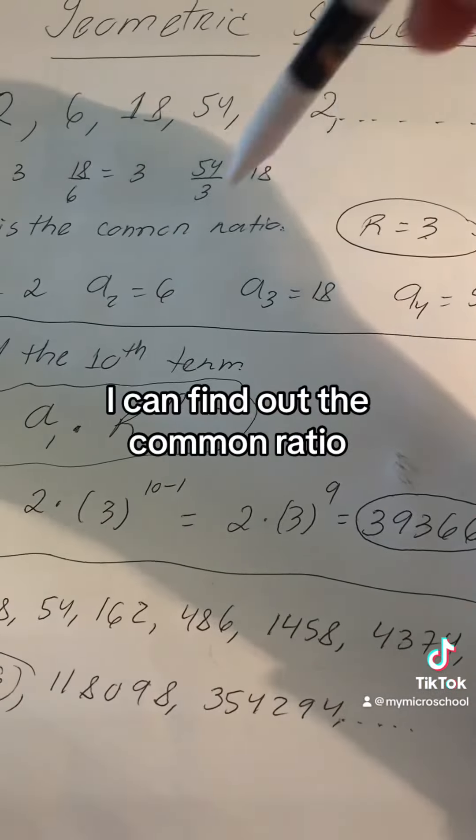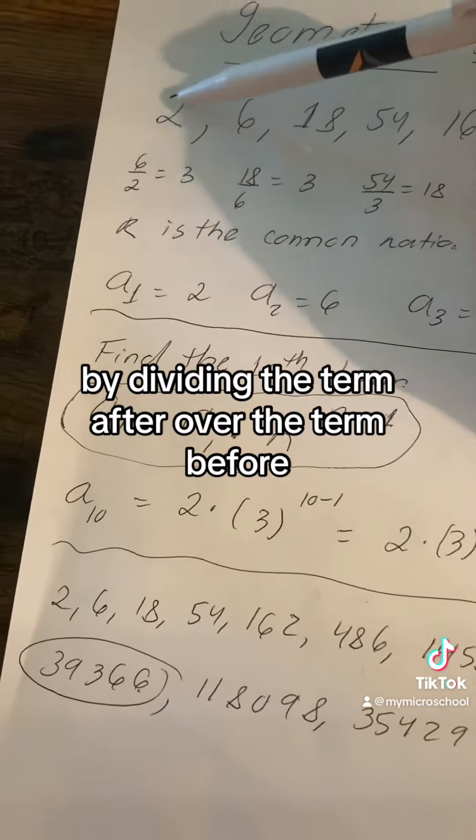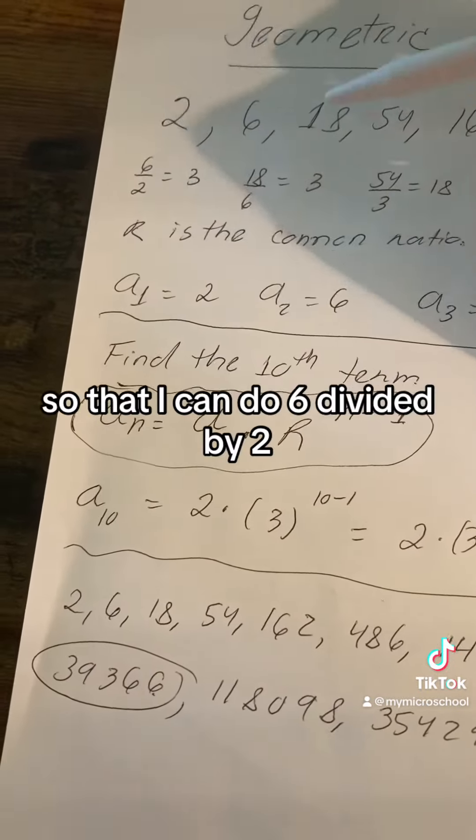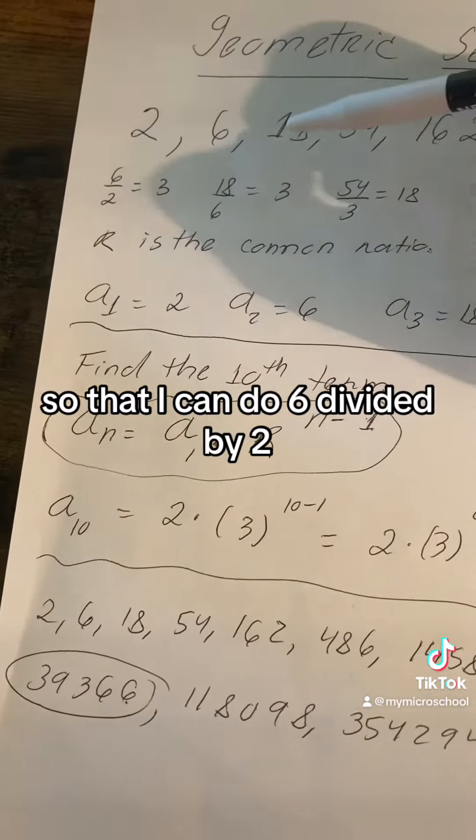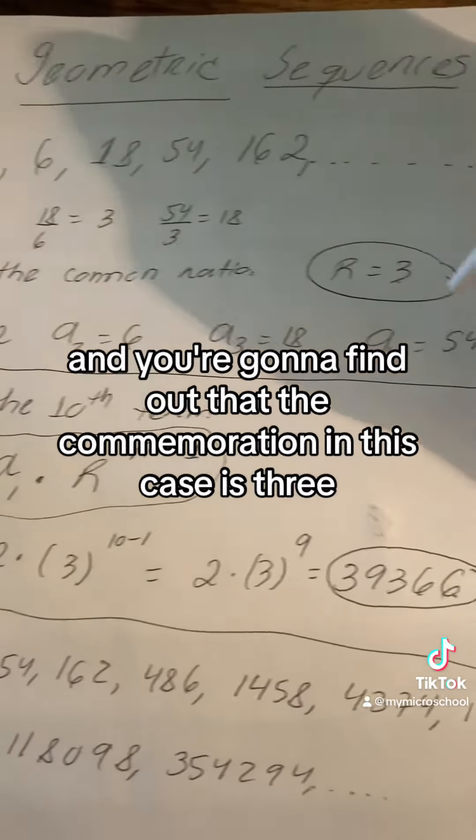I can find out the common ratio by dividing the term after over the term before. So I can do 6 divided by 2 or 18 divided by 6 and so on, and you're going to find out that the common ratio in this case is 3.